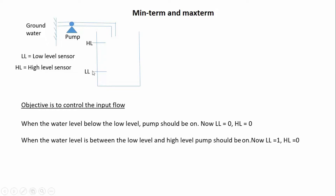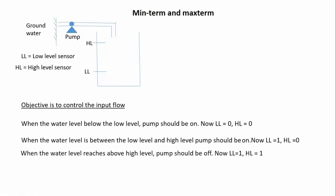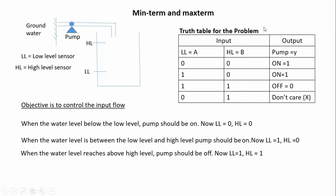When the water level is between low level and high level, LL will sense so LL equals 1, HL does not sense so HL equals 0 — in that case the pump should be on. Third case: when the water level reaches high level, both the low level sensor and HL sense, so LL equals 1 and HL equals 1, but the pump should be off. This is the truth table for the problem.